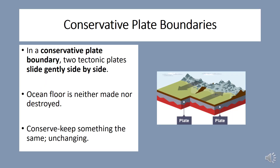The third type is conservative plate boundaries. In a conservative plate boundary, two tectonic plates slide gently side by side. Ocean floor is neither made nor destroyed.